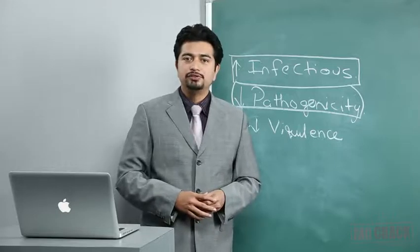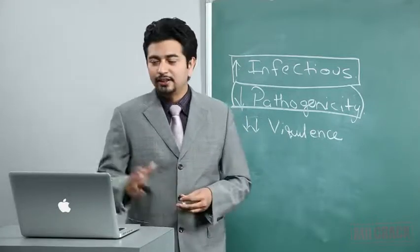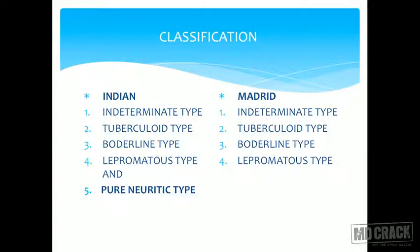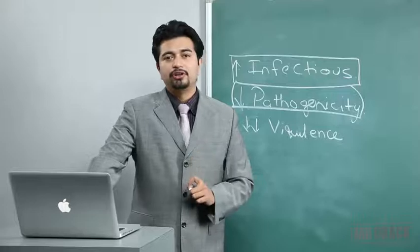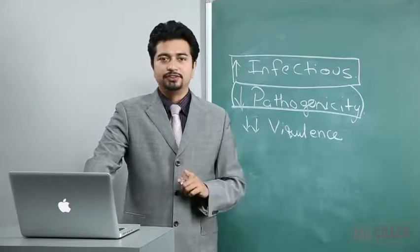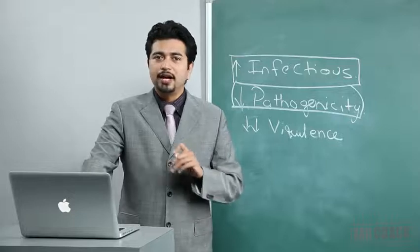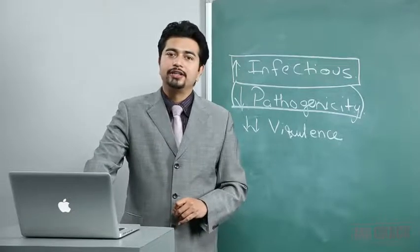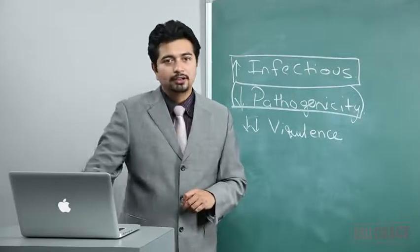The classification of leprosy includes the Indian classification and the Madrid classification. Both include intermediate, tuberculoid, borderline, and lepromatous types. The only difference is that the Indian classification adds the pure neurotic type — where only a single nerve is involved with no other clinical features. The Madrid classification does not include this type.